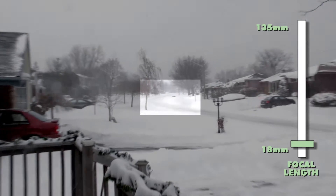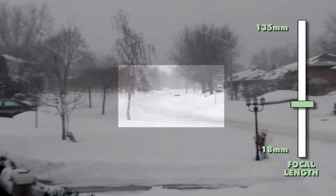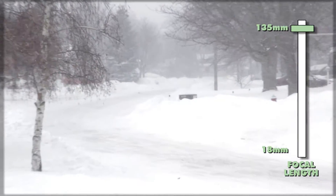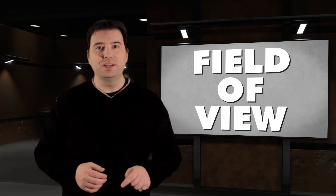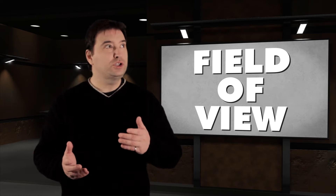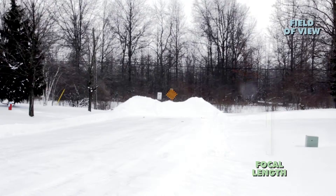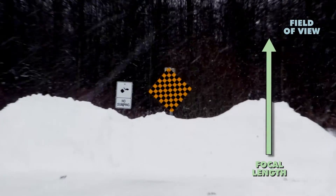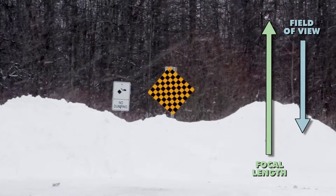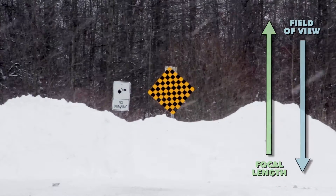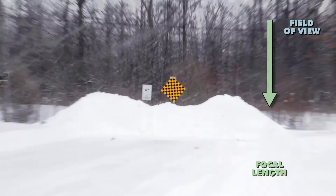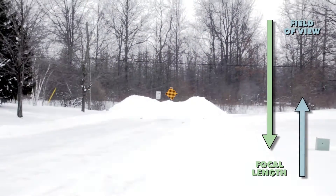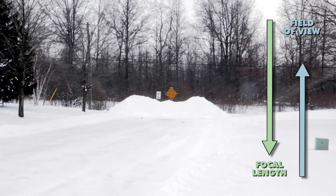Zooming in is the optical equivalent of magnifying the entire picture. Focal length is related to something called field of view, which refers to how much of the scene you can see with the camera. When you zoom in or increase your focal length, you reduce the field of view. When you zoom out or decrease the focal length, you increase the field of view.